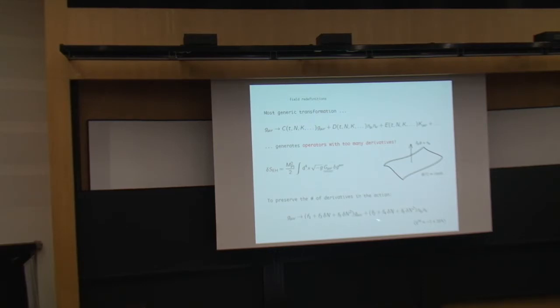We can just do a generalization of a conformal and a disformal transformation. This is the conformal part, and this is the disformal part. And we have six free parameters at our disposal. These are the fi parameters, which are three functions of time. And the conformal and disformal factors are constructed from the perturbation to the lapse function, which is this delta N. And Lorenzo will now explain to you what we can do with these redefinitions.